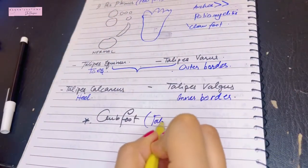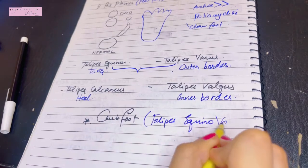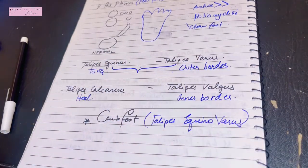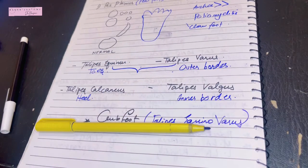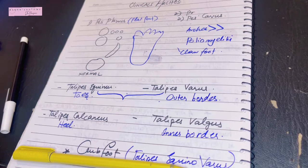Another combination that occurs is the talipes calcaneo valgus, however this is less common. So that was all we needed to know about the clinicals of the arches. I really hope you understood the arches of the foot topic and don't forget to subscribe to my channel. Thank you so much for watching.